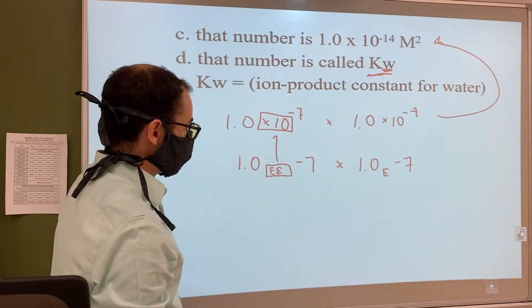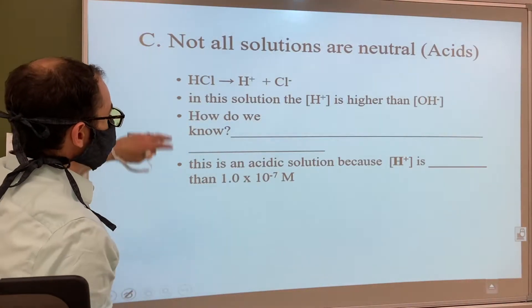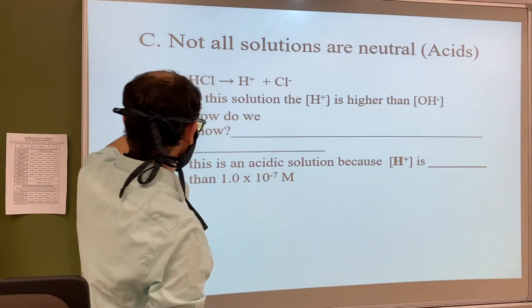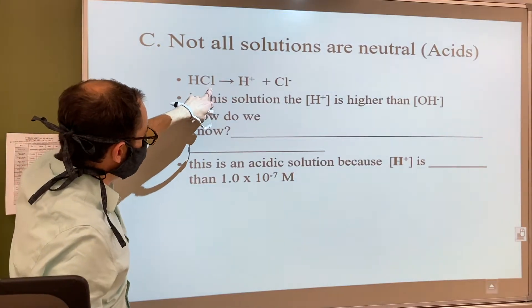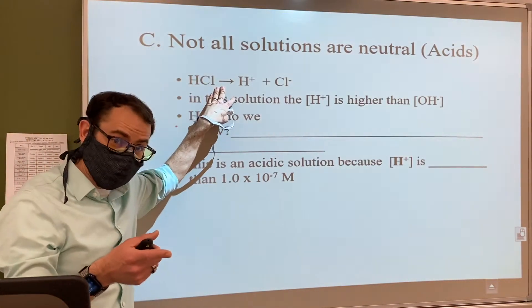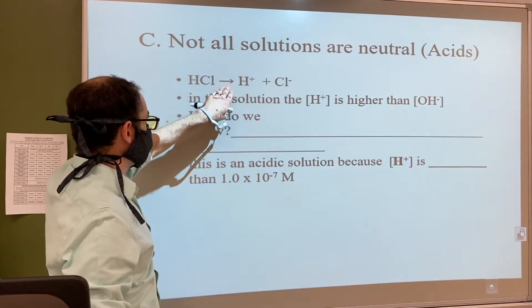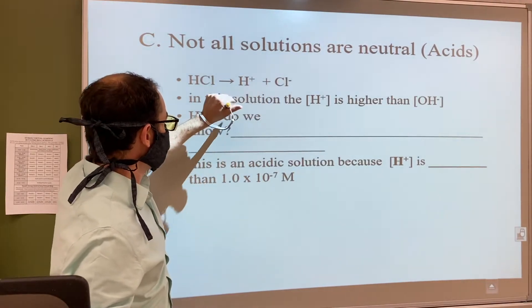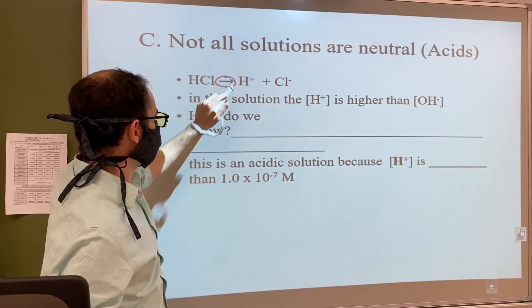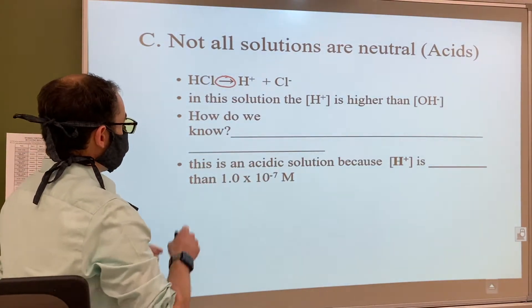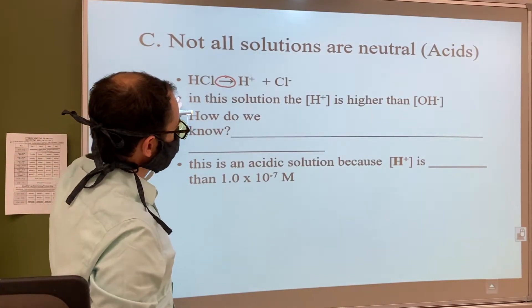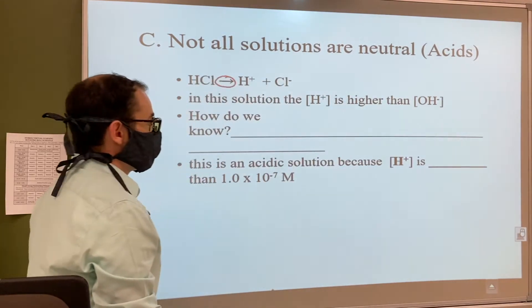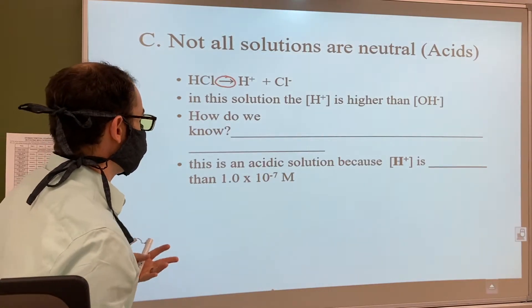Now not all solutions are neutral, so the first thing we're going to talk about are acids. If we have HCl - HCl is a strong acid, right? Strong acid because it's one of the six or seven that we memorized. That means it completely dissociates or splits apart into these two, which also means we only use this one-way arrow. In this solution, the [H+] is going to be higher than the [OH-].